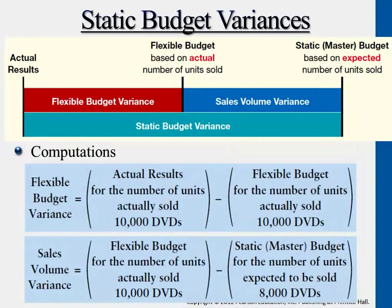If you want to calculate the variances, sales volume variance basically just means based on the 10,000 DVDs actually sold, compared against 8,000 that we planned to sell — the difference is 2,000. And then what is the sales price times that 2,000 units? What are the variable expenses and fixed expenses? At the end, that will give us the sales volume variance. That's this part here.